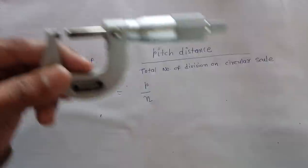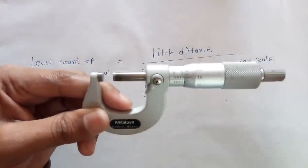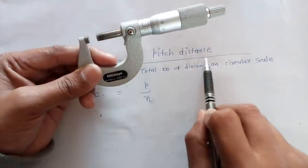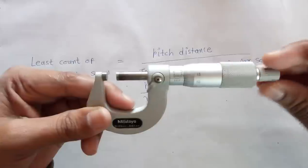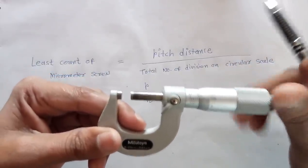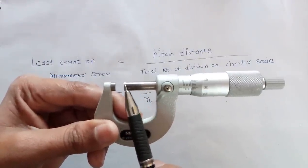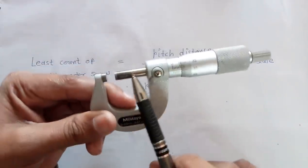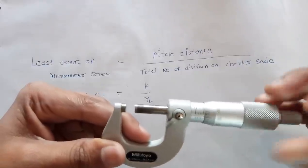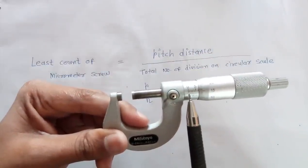Pitch distance is normally exact. The smallest division on main scale is exact pitch distance. And actually pitch distance is what that if we give a complete rotation to thimble, a spindle is moved forward or backward. The distance travelled by spindle per unit rotation of thimble is known as pitch distance.